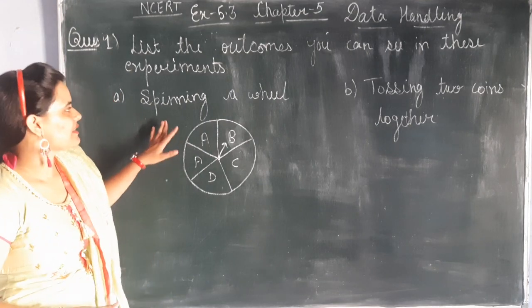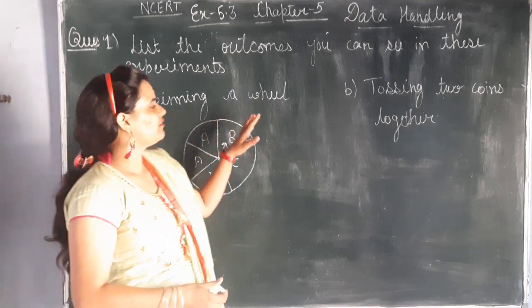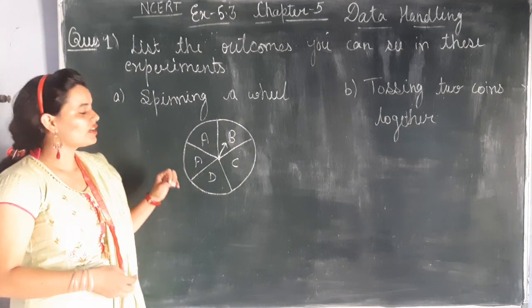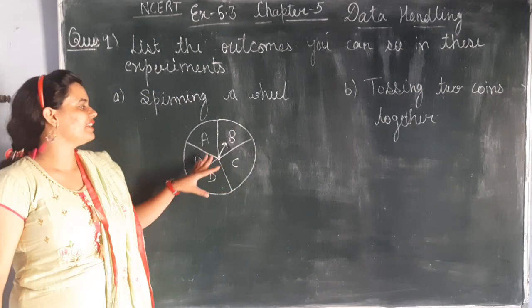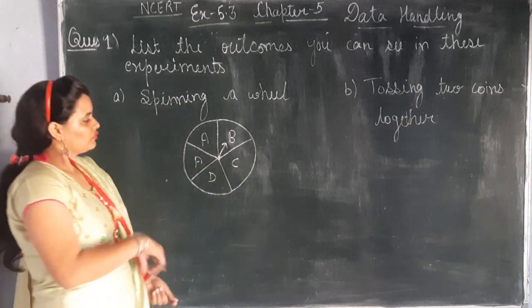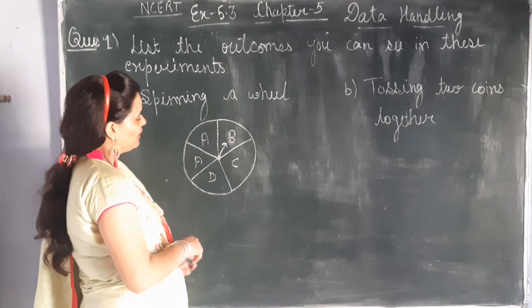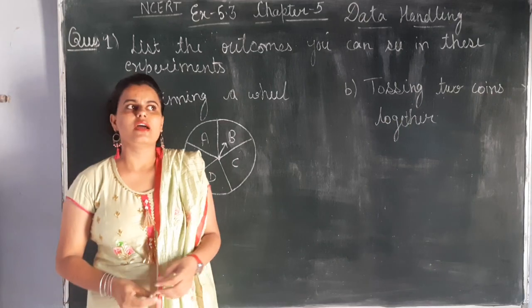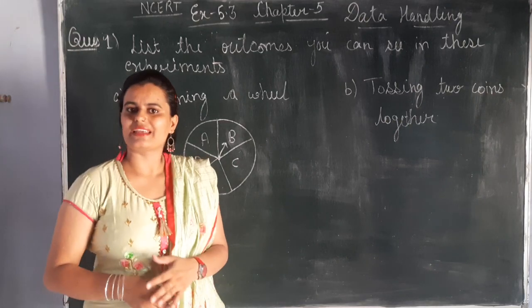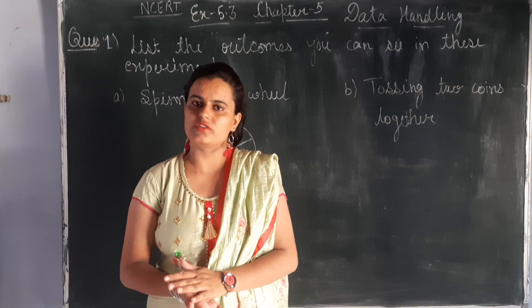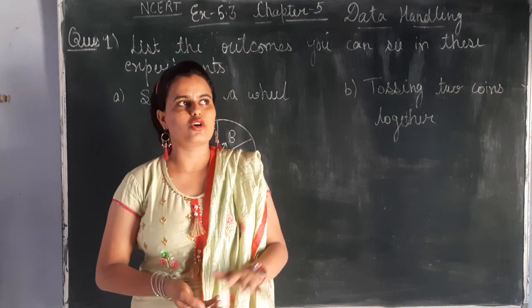The first part is the spinning of a wheel. We will tell the outcomes of this experiment. There is a wheel, and we will tell you what outcomes are possible in this case.